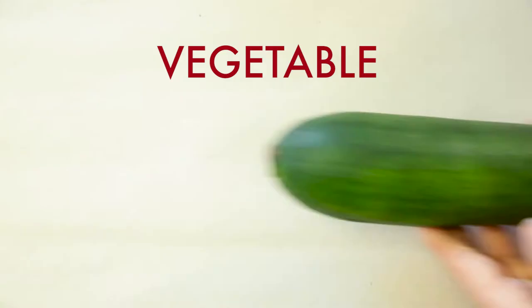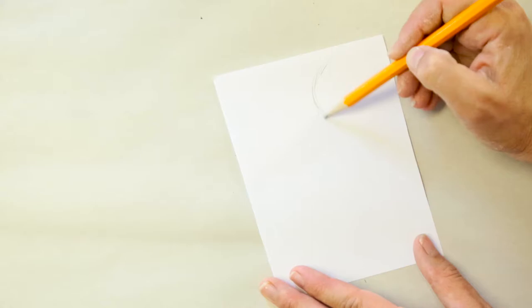Simple subtractive sculptures can be done at home using a bar of soap, a vegetable, or a block of clay like the one I have here.